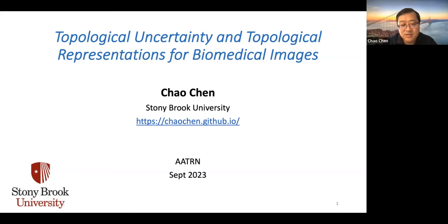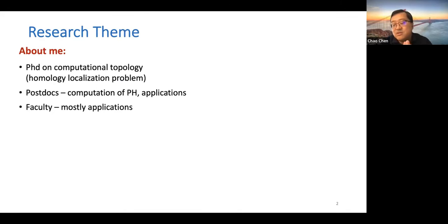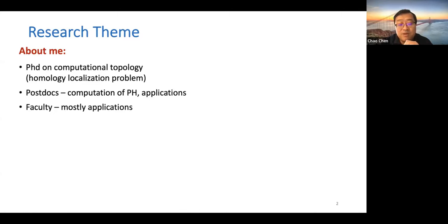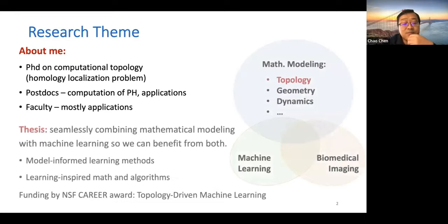My name is Chao Chen from Stony Brook University. A little bit about my background: I actually started doing more theoretical computational topology, more from the algorithm side. We were basically working on this homology localization problem in which we are given a simplicial complex and a specific homology class — the question is, can you find the best generator in the optimal sense? Later I started postdocs — two postdocs — working on computation of persistent homology with Herbert. I started to apply this to different application fields, and eventually I landed on biomedical image analysis as well as machine learning. As a faculty, I've been spending more time on the application side, but I still keep my roots in using the right topological methods and how best to use them in practice.